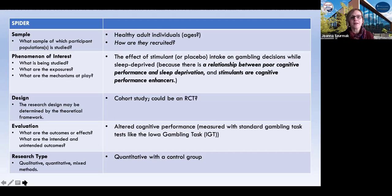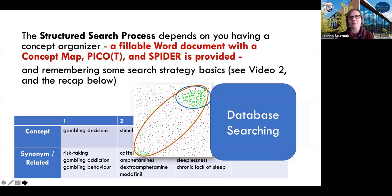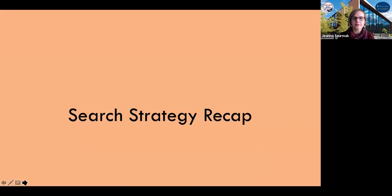But again, PICO doesn't work with all question types. This really tells you first of all that you're never alone with your research question — there are ways to try to break it down and tease out what really interests you about it and what are the important points that may be implied, like the population or your recruitment strategy. I will provide a fillable Word document with all three: the concept map, the PICO organizer, and the SPIDER, so you can play around with your research question. So let's do a very brief search strategy recap.